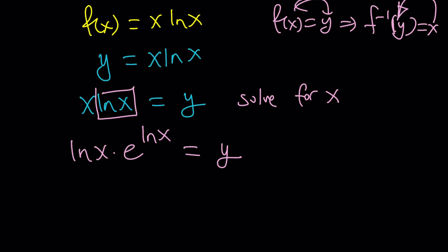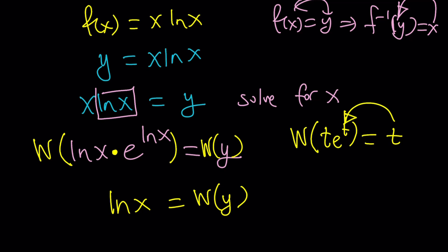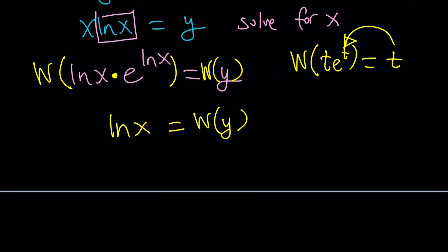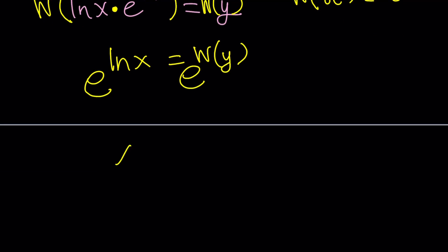And then we're going to Lambert both sides, put a big W on both sides, and then we're going to get the following. When you apply W, Lambert's W, on something like T e to the T, the output will be T. In other words, it's the inverse function for T e to the T. So when you apply it to something like this, you're going to get ln x. That's going to be your output. And that's equal to W of y. Remember, our goal is to solve for x first. So let's do e to the power of both sides. E to the power of this, e to the power of that. And e to the ln x is actually x. So x becomes e to the power W of y.